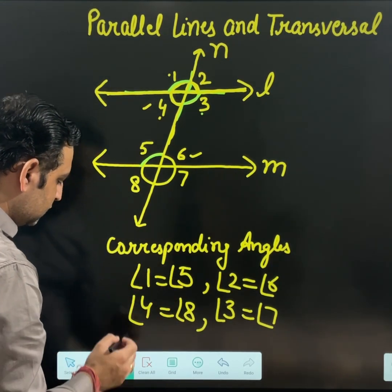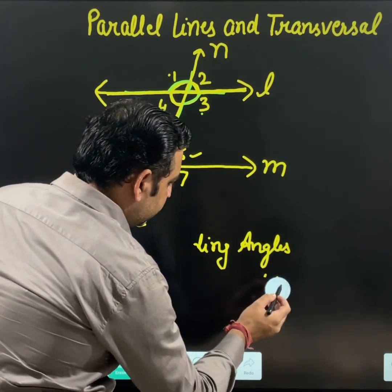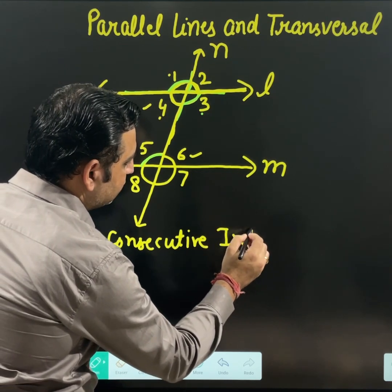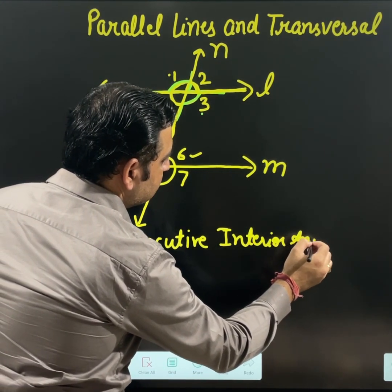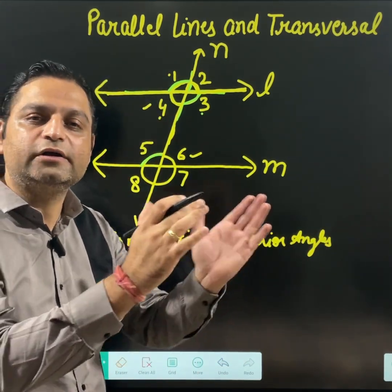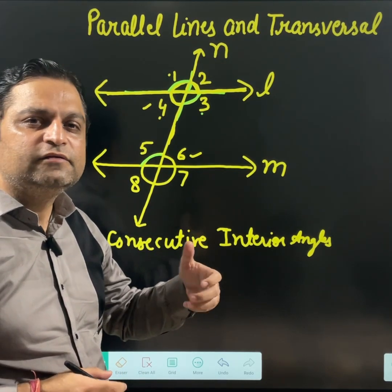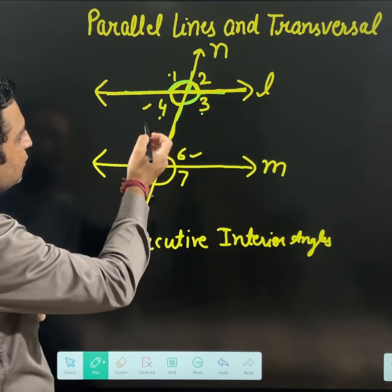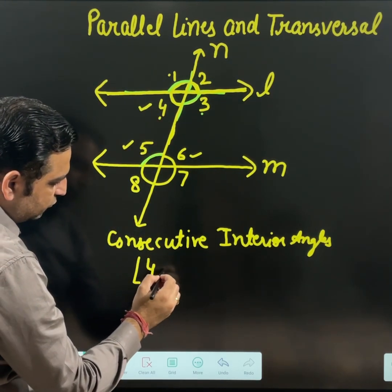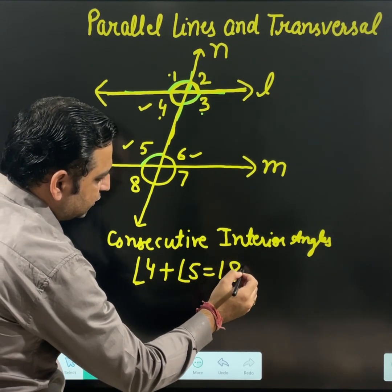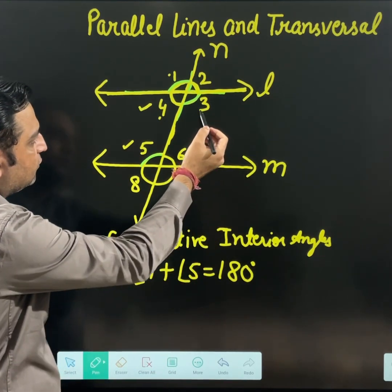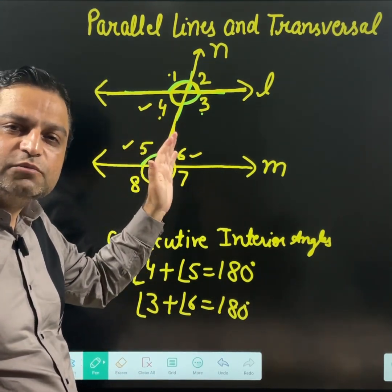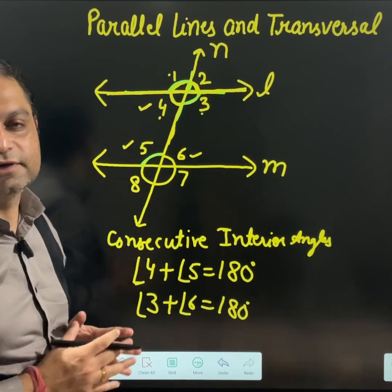The last relation is consecutive interior angles, sometimes written as co-interior angles. These deal with interior angles 3, 4, 5, and 6. Consecutive means next to each other. So angles 4 and 5 — their sum will always be 180 degrees in the case of parallel lines. And angles 3 and 6 — their sum will also be 180 degrees. These are interior angles on the same side of a transversal, and they are supplementary.